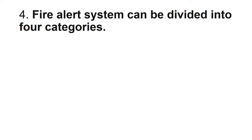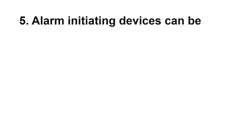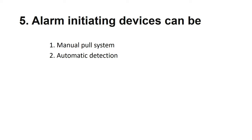Fire alert systems can be divided into four categories: local, central station, remote system, and periphery. Alarm initiating devices can be manual pull system and automatic detection. The manual pull system allows a security guard or any person who sees unusual activity to pull the string and activate the alarm. Automatic detection means sensors will detect fire or intrusion and send a message to the control panel, which will then initiate the alarms.